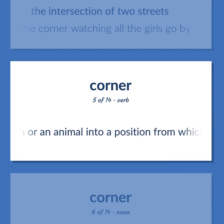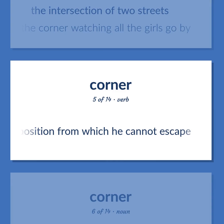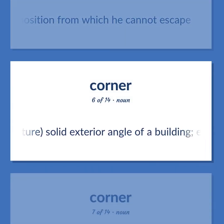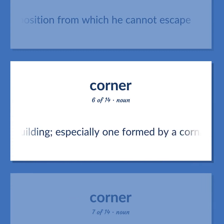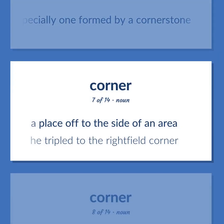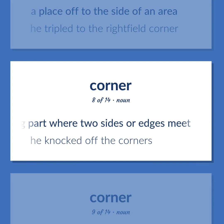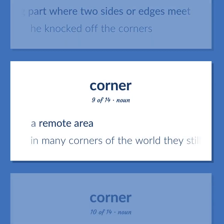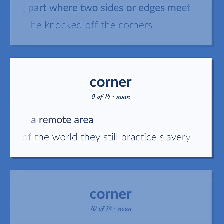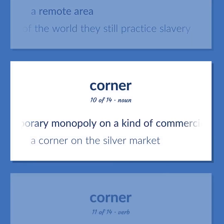Force a person or an animal into a position from which he cannot escape. Architecture: solid exterior angle of a building, especially one formed by a cornerstone. A place off to the side of an area. He tripled to the right field corner. A projecting part where two sides or edges meet. He knocked off the corners. A remote area. In many corners of the world they still practice slavery. A temporary monopoly on a kind of commercial trade. A corner on the silver market.